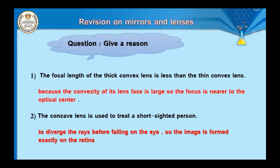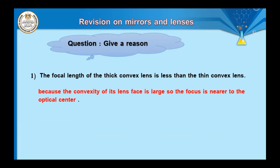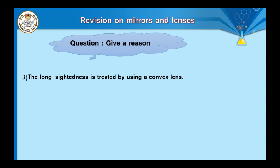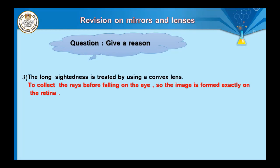Question number three: long-sightedness is treated by a convex lens — the opposite of short-sightedness treatment. In long-sightedness, the image forms behind the retina, and the person cannot see near objects clearly. The convex lens collects rays before they fall on the eye, so the image forms exactly on the retina and near objects can be seen clearly.